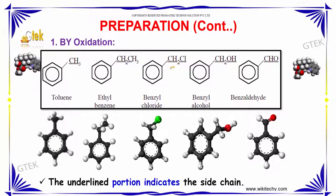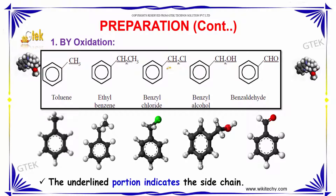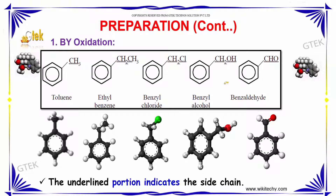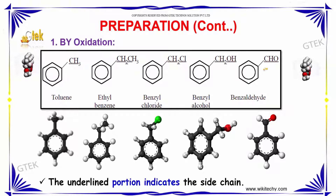For benzyl chloride, the side chain is CH2Cl. For benzyl alcohol, it is CH2OH, and for benzaldehyde, it is CHO.